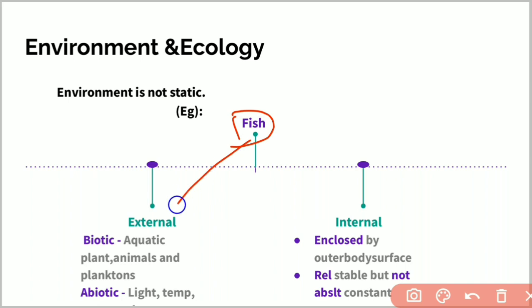For example, fish have both external and internal environment. The external environment of fish includes biotic components like aquatic plants, animals, and planktons which are microscopic organisms.